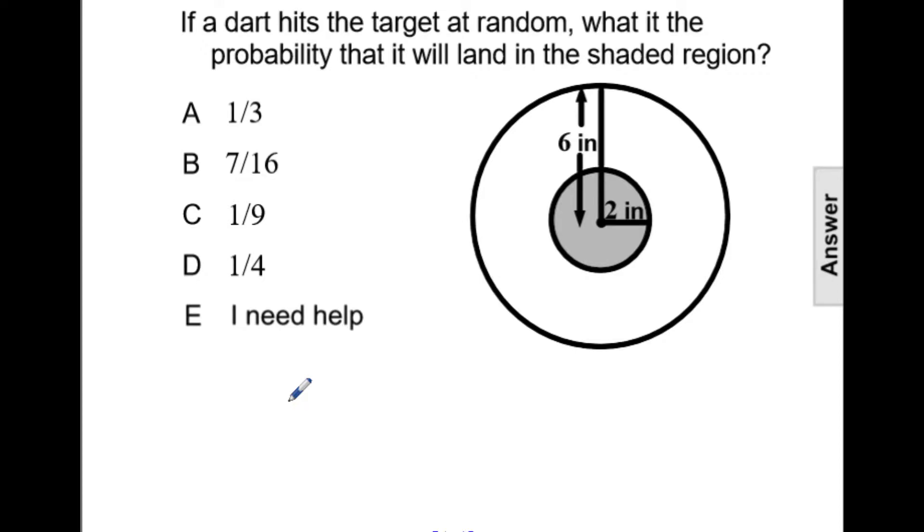If a dart hits the target at random, what is the probability that it will land in the shaded region?